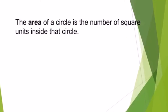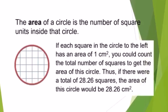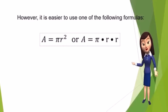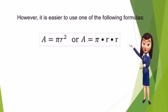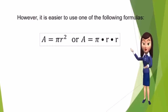The area of a circle is the number of square units inside that circle. If each square in the circle has an area of 1 square centimeter, you could count the total number of squares to get the area. If there were a total of 28 and 2600 squares, the area of this circle would be 28 and 2600 square centimeters. However, it is easier to use one of the following formulas.